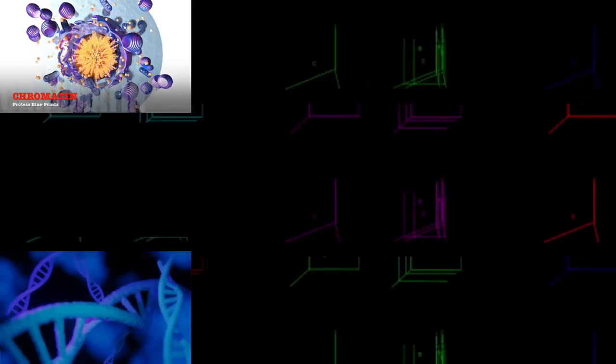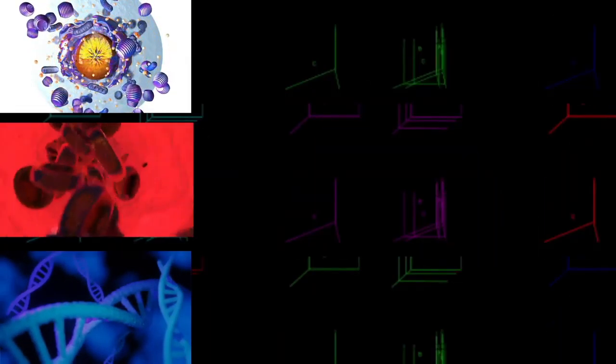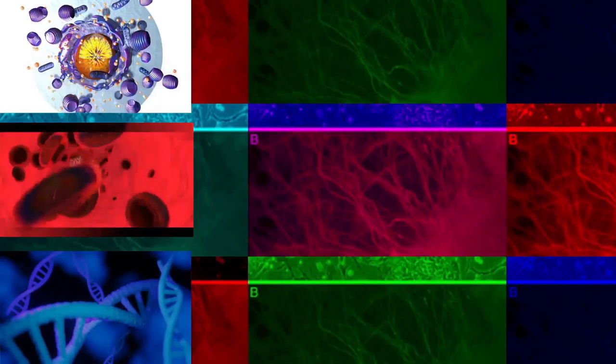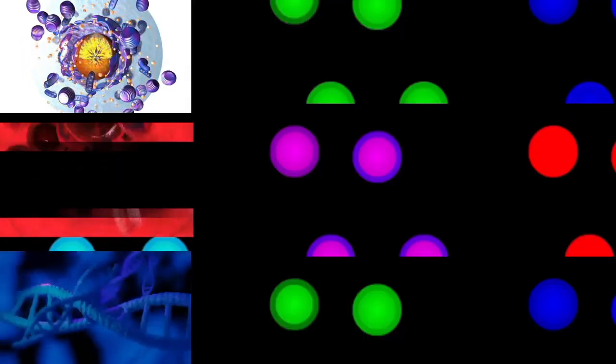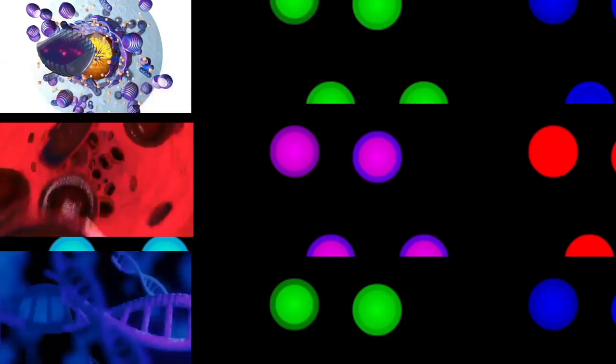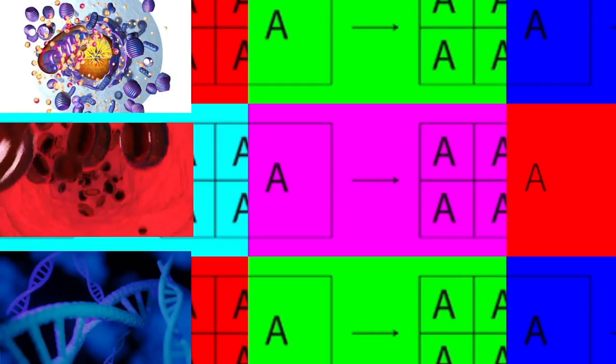It has been suggested that the bacterial order Planctomycetes has a membrane around the nucleoid and contains other membrane-bound cellular structures. However, further investigation revealed that Planctomycetes cells are not compartmentalized or nucleated and, like other bacterial membrane systems, are interconnected.